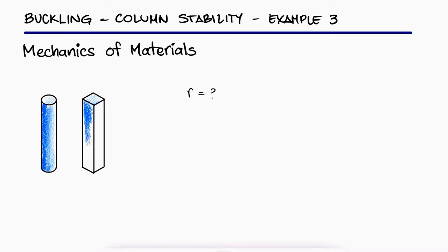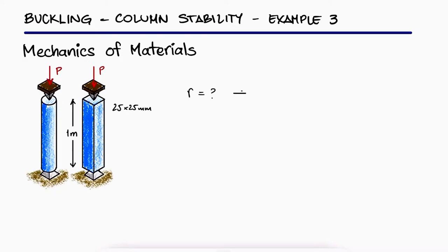Determine the radius of the round strut so that the round and square struts have the same cross-sectional area and compute the critical load for each. Use an elastic modulus of 200 gigapascals.